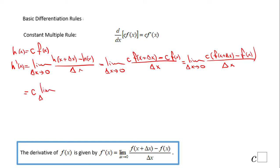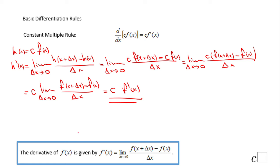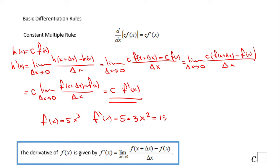We have the limit as delta x approaches zero of c times [f(x + delta x) minus f(x)] over delta x. Using the property of limits we can remove the c and put it up front: c times the limit as delta x approaches zero of [f(x + delta x) minus f(x)] over delta x. This last limit is nothing else than f prime of x, so we've proved the constant multiple rule. For example, if f(x) = 5x cubed, the derivative is 5 times the derivative of x cubed, which is 3x squared, giving a final answer of 15x squared.